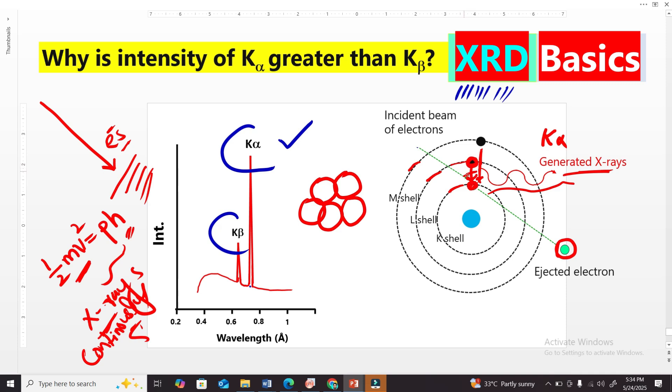So there is a higher probability, more chance to fill by this L-shell as compared to the M-shell. Now as I explained, there are billions of atoms.